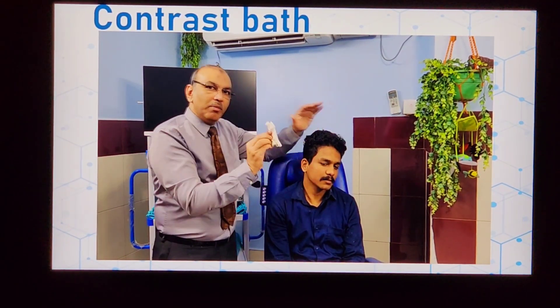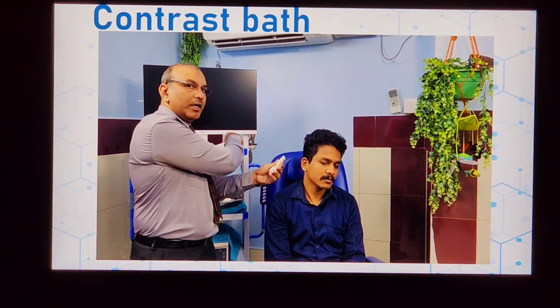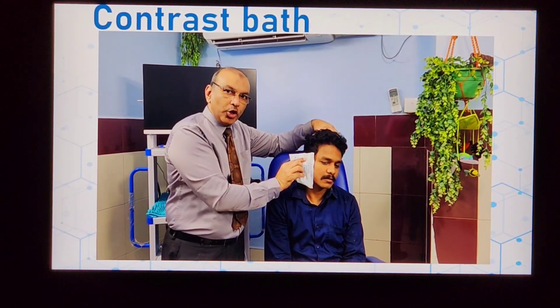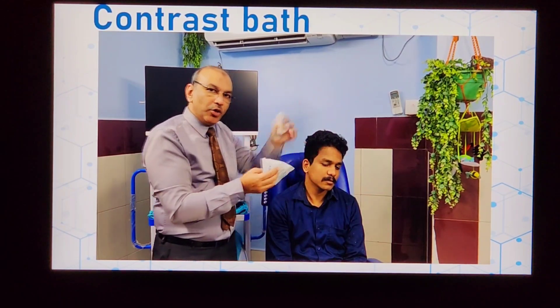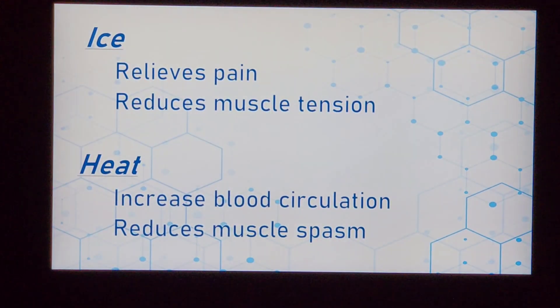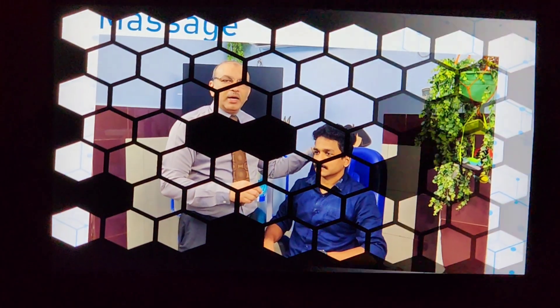One session per day, and a total of 5 sessions — that is, for 5 days. The reason for using ice followed by warmth: ice relieves pain and reduces muscle spasm, while heat increases local blood supply and also reduces muscle spasm.